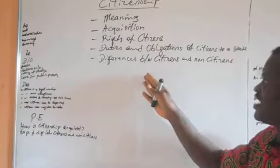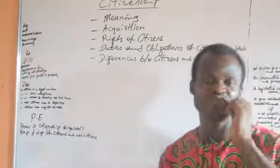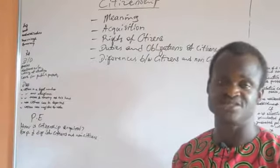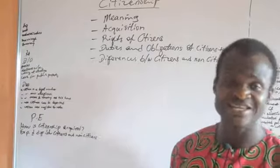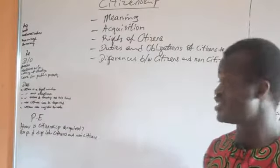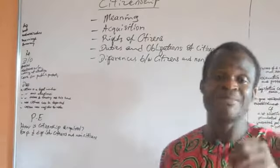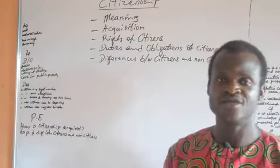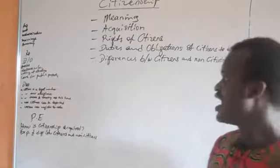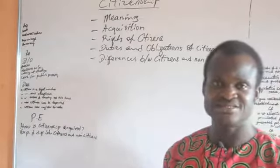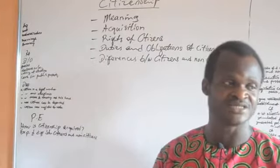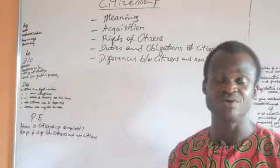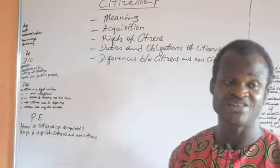A citizen and a non-citizen are not the same — there are differences between them. Number one, a citizen is a legal member of a particular country, but a non-citizen is not a legal member of that country. A citizen has allegiance — he pays loyalty, allegiance, and support to a particular country. But a non-citizen is not bound to pay allegiance to that country, as he is a foreigner.